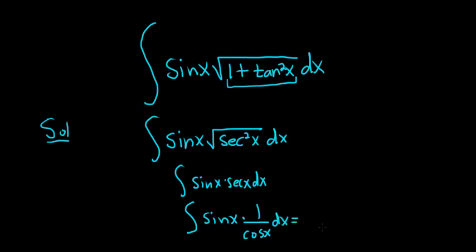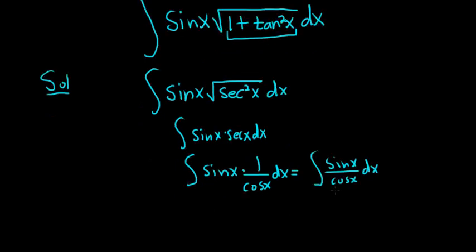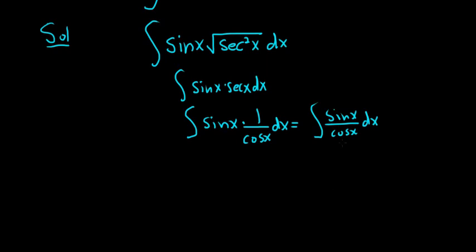This ends up being sine x over cosine x, dx. This is tangent, but to integrate tangent, you write it as sine over cosine, and you make a substitution.